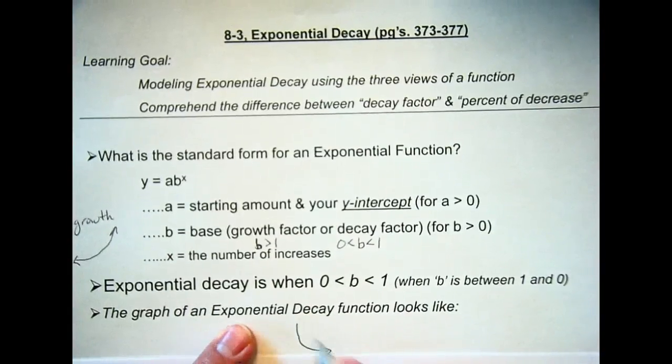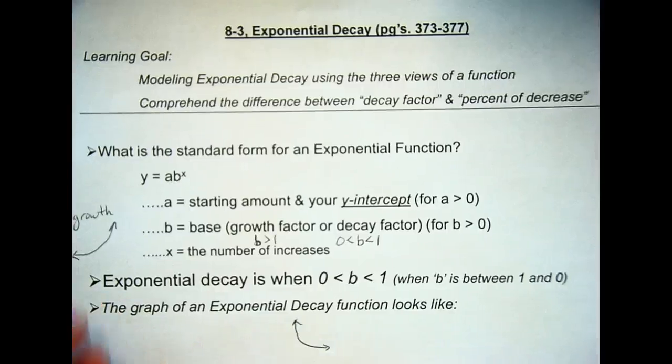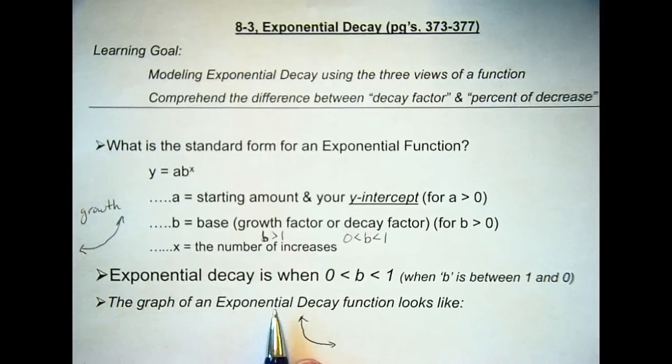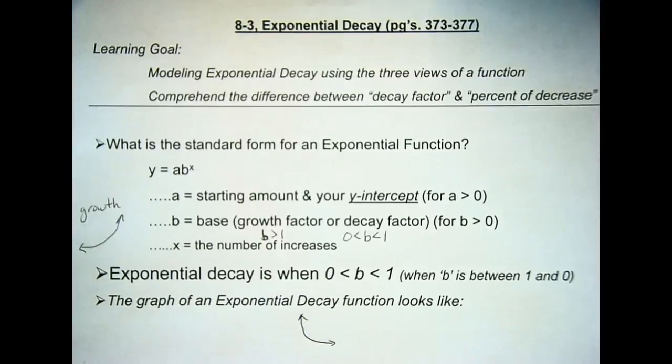Okay? So, as you're moving from left to right on your graph, as X is increasing, Y is decreasing. Or as you're moving from left to right, the graph is going down. That's a decay.